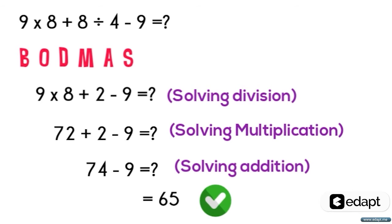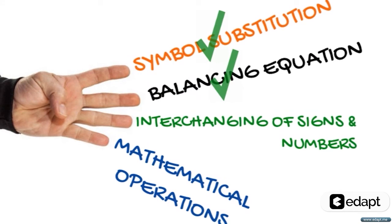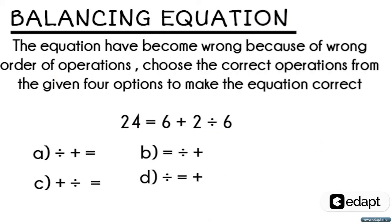Now let us move on to the second type, the balancing equation. Let us understand the concept more through a problem. The equations have become wrong because of wrong order of operations. Choose the correct operations from the given four options to make the equation correct. 24 is equal to 6 plus 2 divided by 6, and here are your four options.